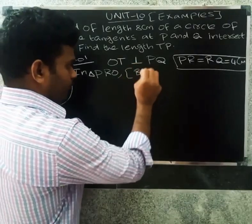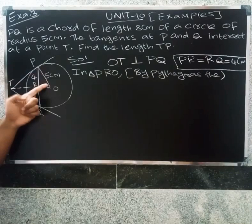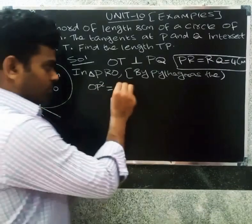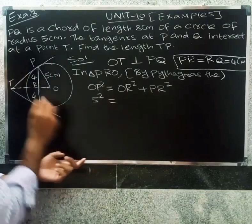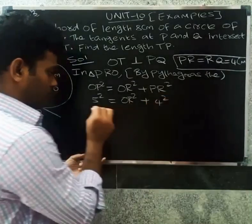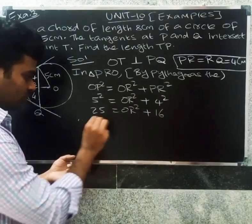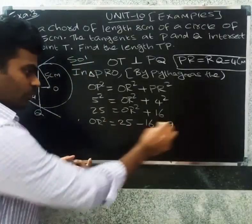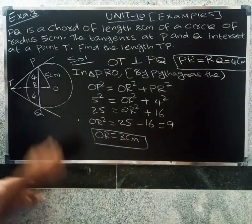By Pythagoras theorem, the hypotenuse side is OP. So OP square equals the sum of the remaining two sides squared: OR square plus PR square. Substituting values: 5 squared equals OR squared plus 4 squared, so 25 equals OR squared plus 16. Therefore OR squared equals 25 minus 16 equals 9. So OR equals 3 centimeters.